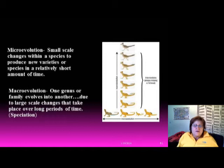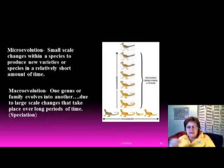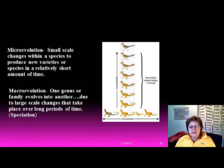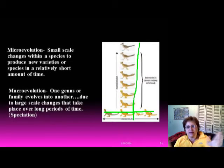Macro evolution is when one genus or family evolves into another due to large-scale changes over a long period of time, also called speciation. You can observe micro evolution on a small scale, but macro evolution requires vast amounts of time — more than a human lifetime of about 80 years.